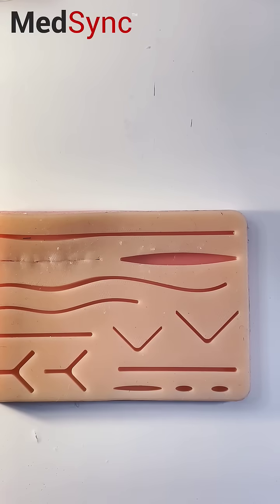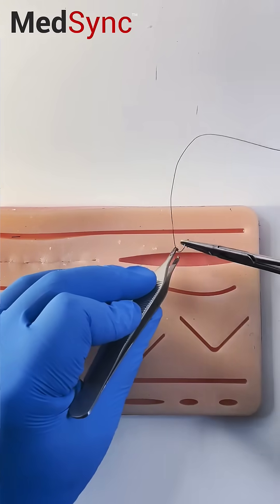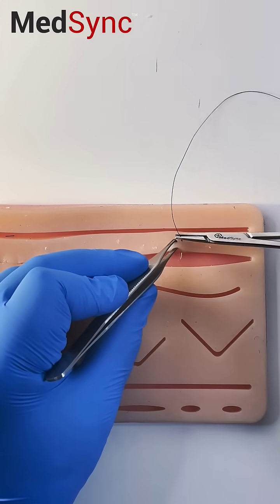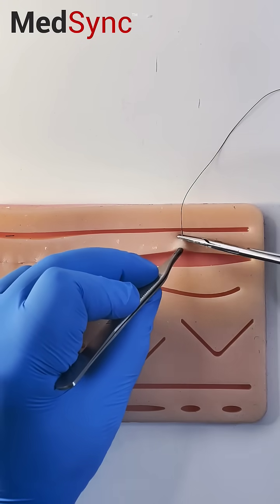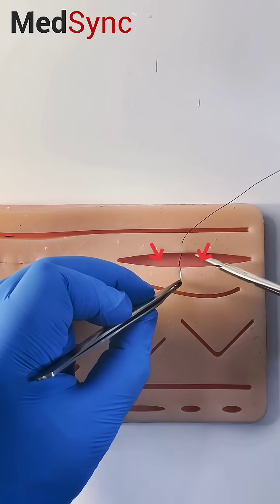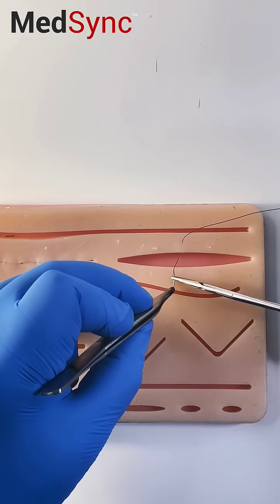This is the technique for the suturing pros. Watch this. You do an interrupted suture to take off the tension so you can put your deep dermals in between this gaping wound.